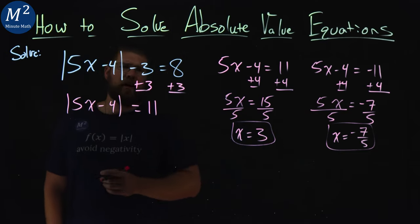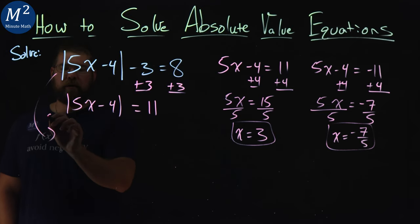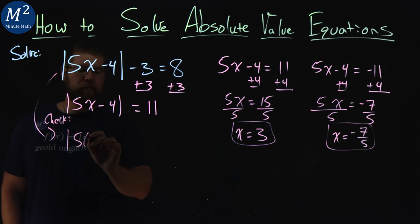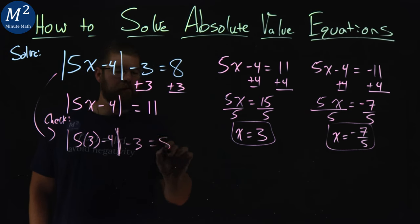So going on, we want to take our original equation and see if the left and right hand side are equal. So I'm going to put it here, my check. I have an absolute value of 5—we'll start with 3 here—minus 4, minus 3 equals 8.